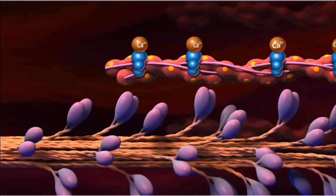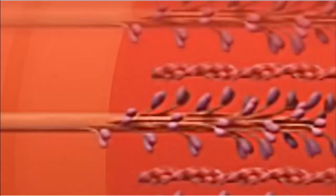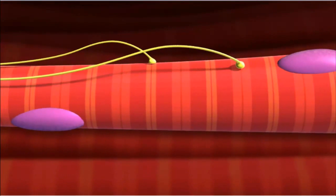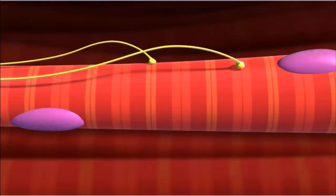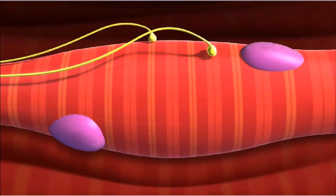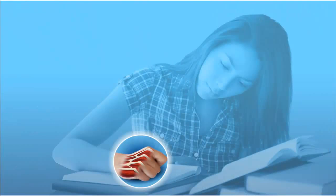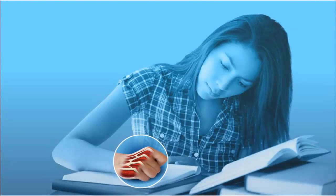As the actin and myosin slide along each other, the entire sarcomere shortens as the Z-lines draw closer to the M-line. As the sarcomeres in myofibrils contract, the entire muscle fiber will shorten. When muscle fibers contract in unison, a muscle can produce enough force to move the body, allowing you to take notes.